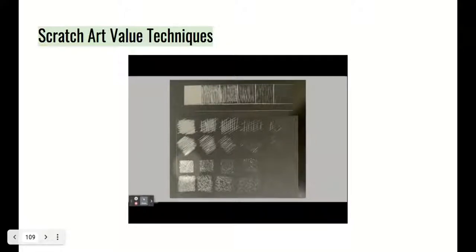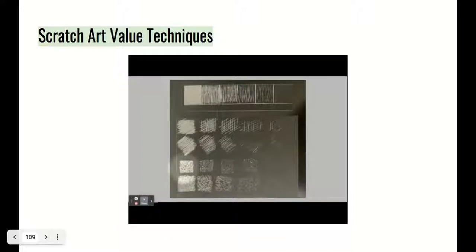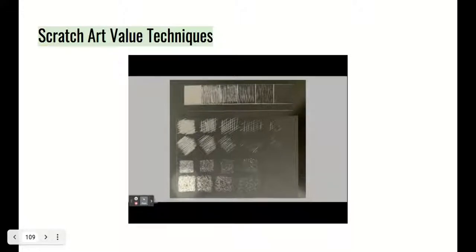The next value technique is stippling, which is very time-consuming when doing scratch art. Stippling is essentially making little dots — the more dots closer together, the lighter your areas are going to be; the fewer dots further apart, the darker your areas will be. The last technique is scribbling — you create organic movements, and layering them on top of one another gives really light areas, while scribbling lightly and keeping them apart gives darker areas. These are some really quick techniques to use when creating value on a scratch board.